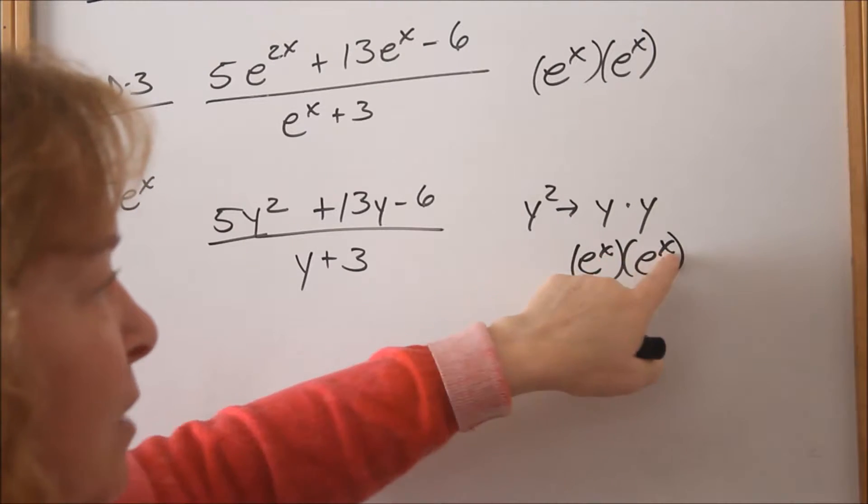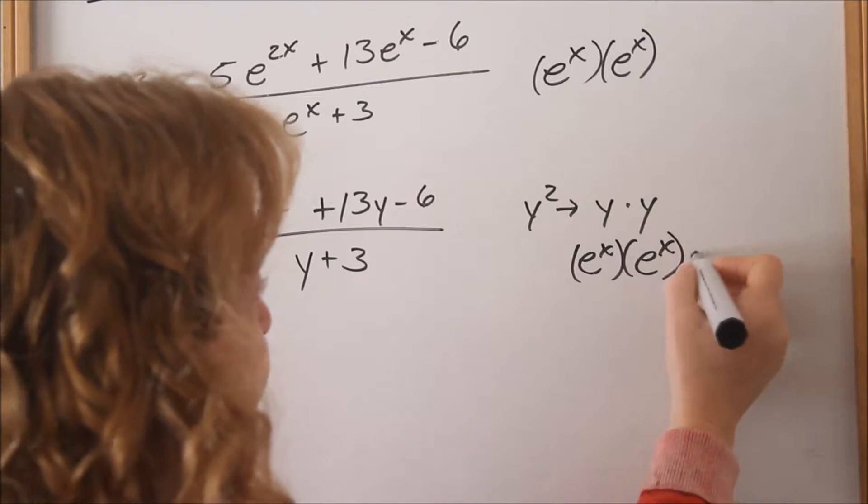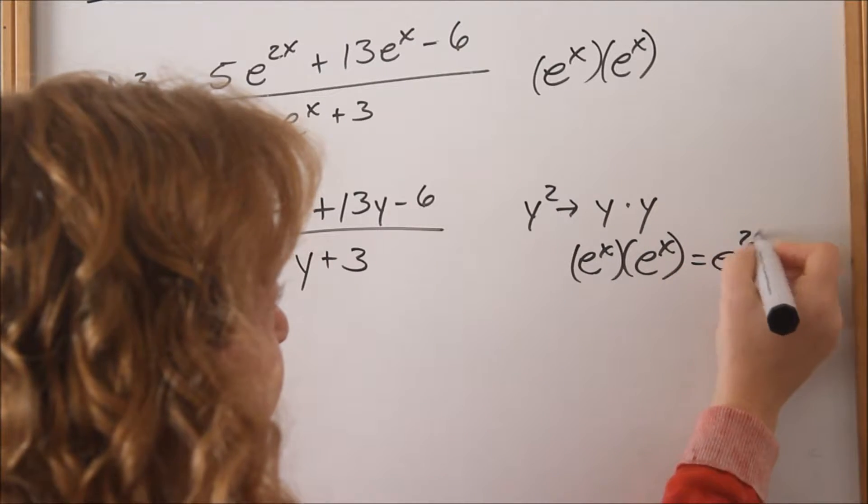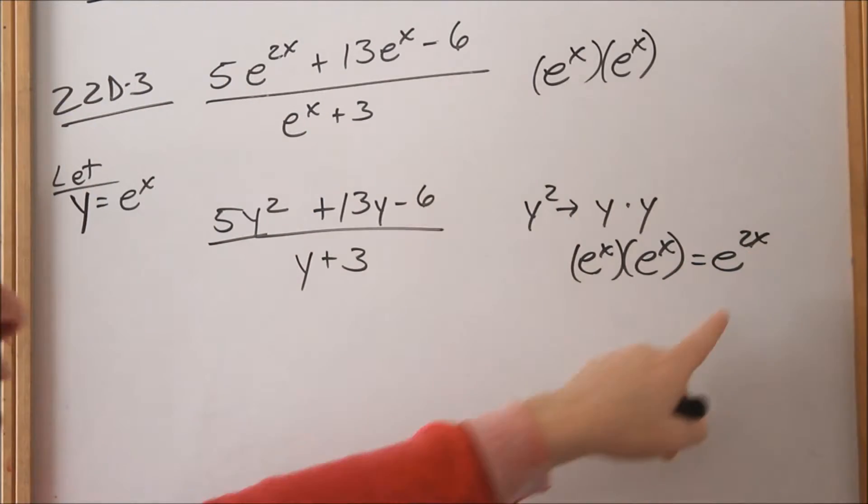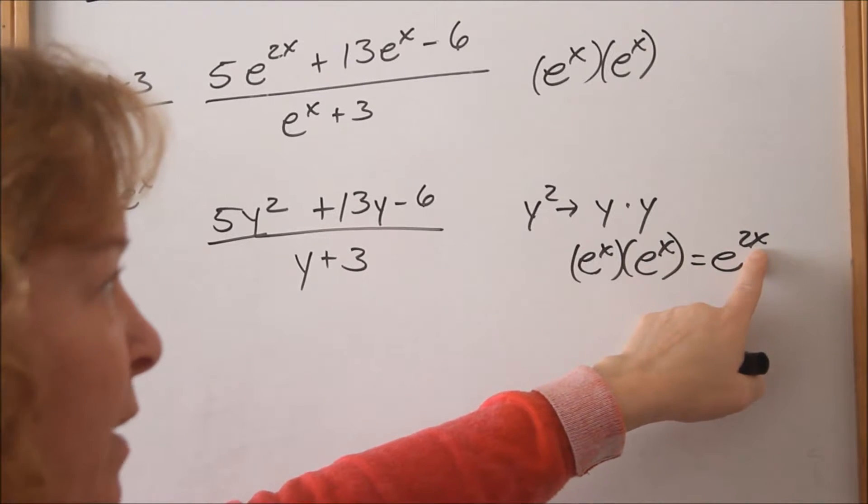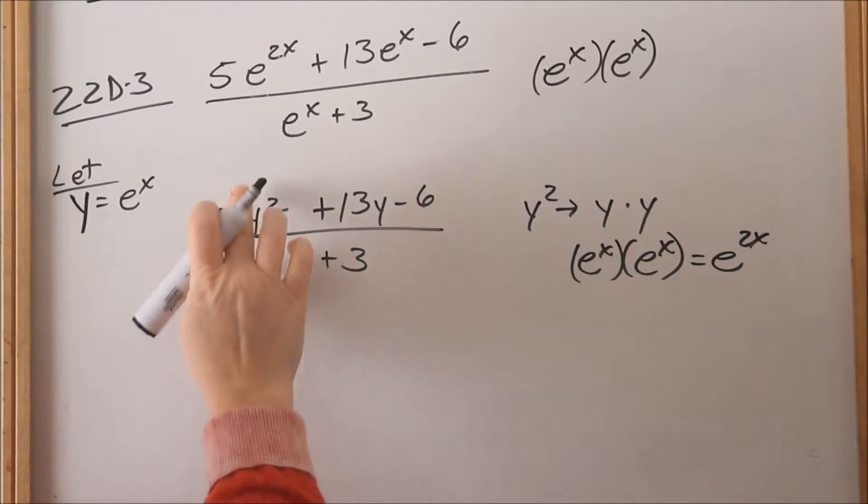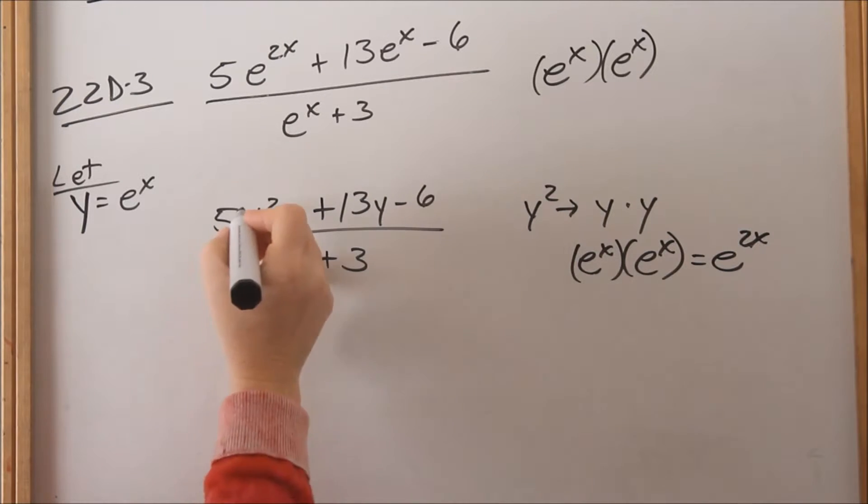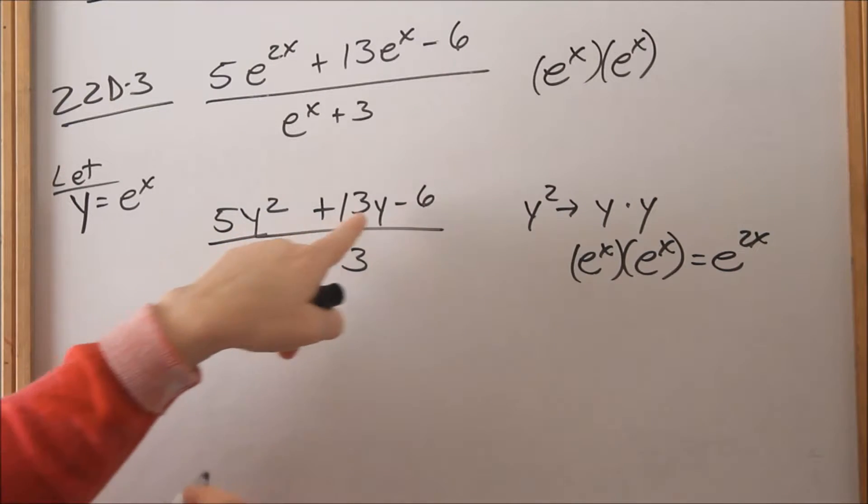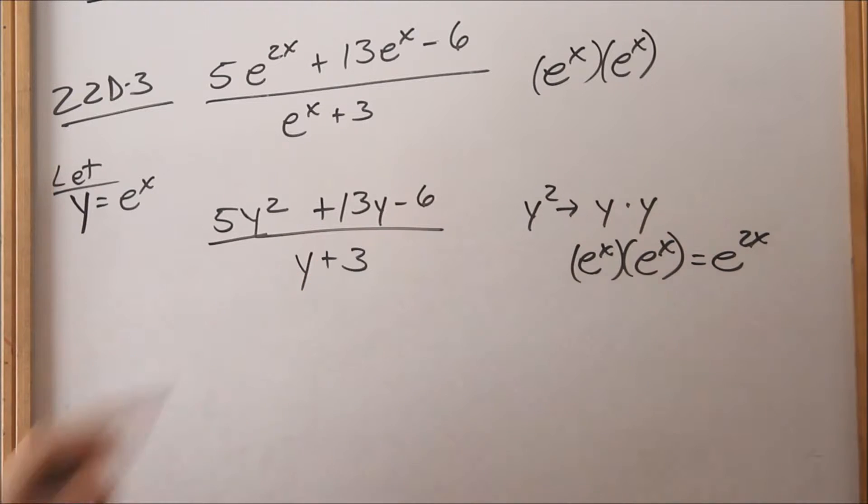When you're multiplying, these exponents get added. So that would be x + x = 2x. So when you have e^(2x), you're basically substituting that with y^2. So this would be 5y^2. This is something more manageable that we can factor than having all the e^x's.